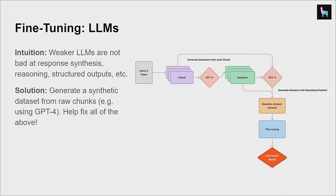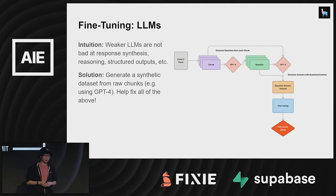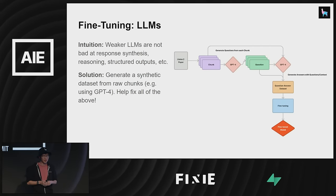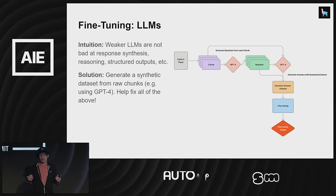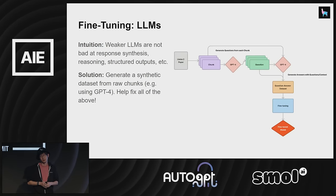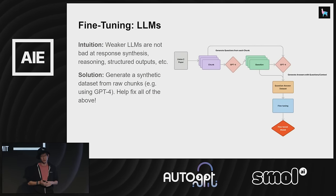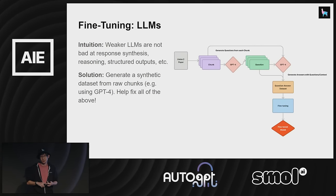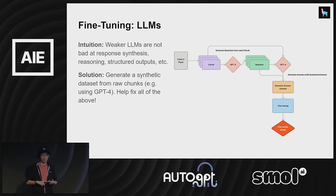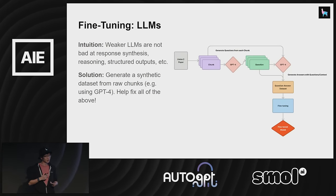So the solution is: what if you can generate a synthetic dataset using a bigger model like GPT-4 — this is something we're exploring — and actually distill that into GPT-3.5 Turbo, so it gets better at chain-of-thought, longer response quality, better structured outputs, and a lot of other possibilities as well.